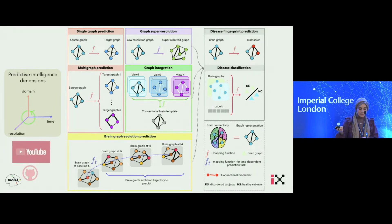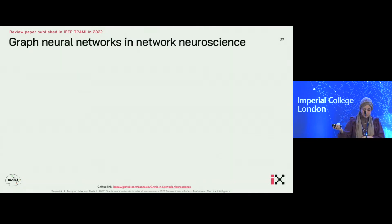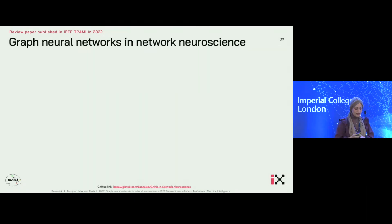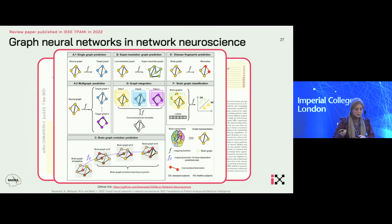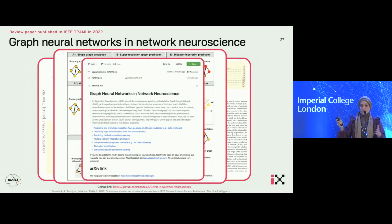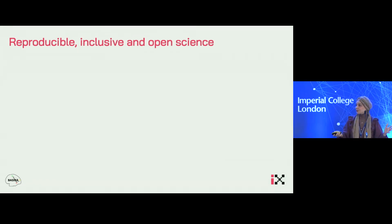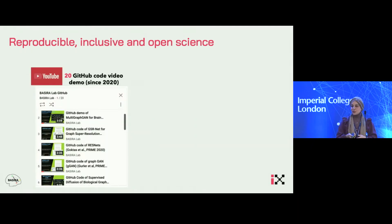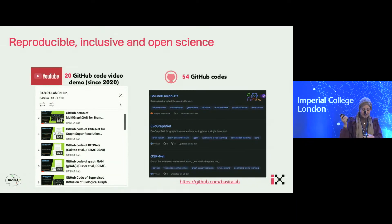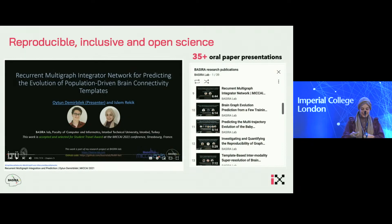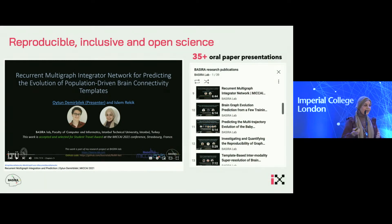There is a whole lot to do when using predictive intelligence in medicine. To sum up, if you're interested, there is a review paper published in 2022 that summarizes all these works in graph neural networks and network neuroscience. The codes are available, and there are many videos on all these works published on the Basura Lab YouTube channel, which is my research lab. We have more than 54 available source codes. We promote open science, open AI, and reproducibility, and there are more than 30 oral presentations too.